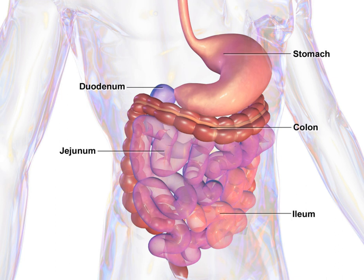The ileum is the final section of the small intestine. It is about 3 meters long and contains villi similar to the jejunum. It absorbs mainly vitamin B12 and bile acids, as well as any other remaining nutrients.